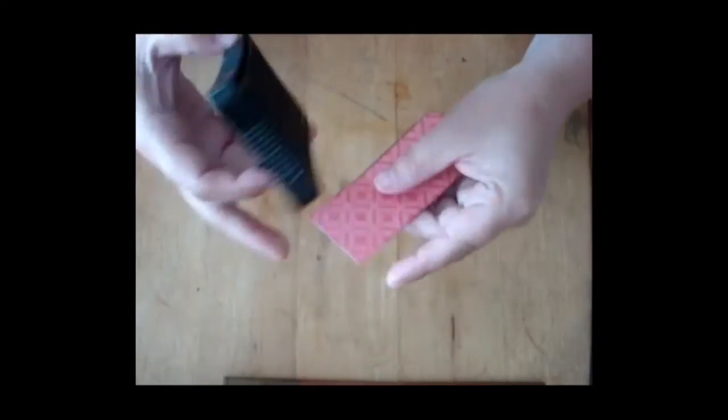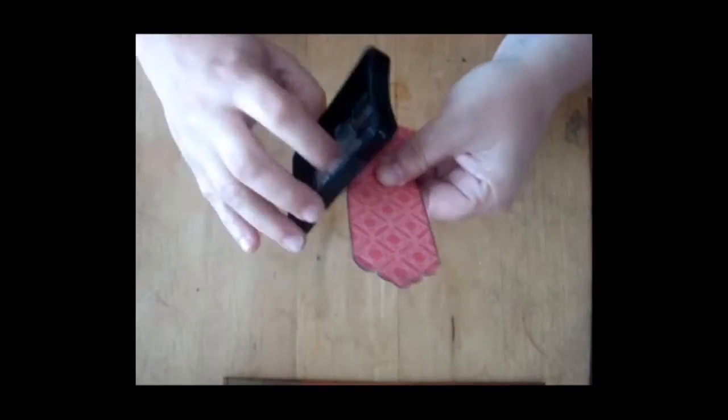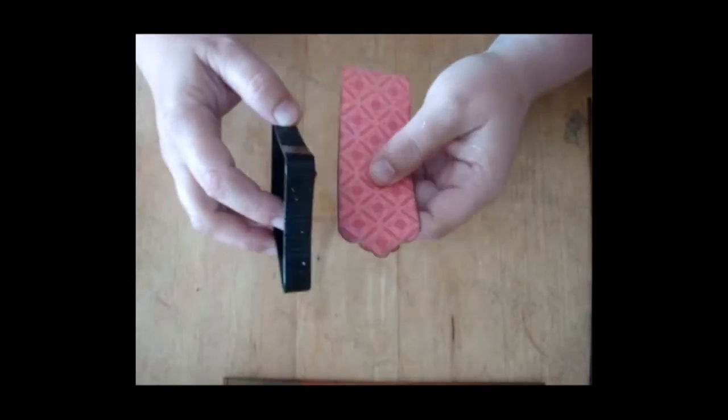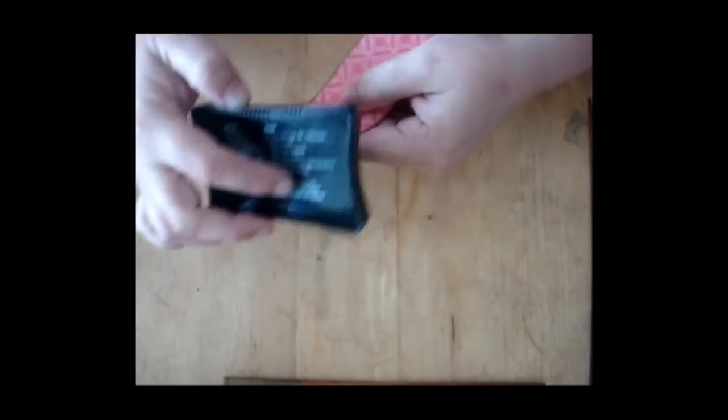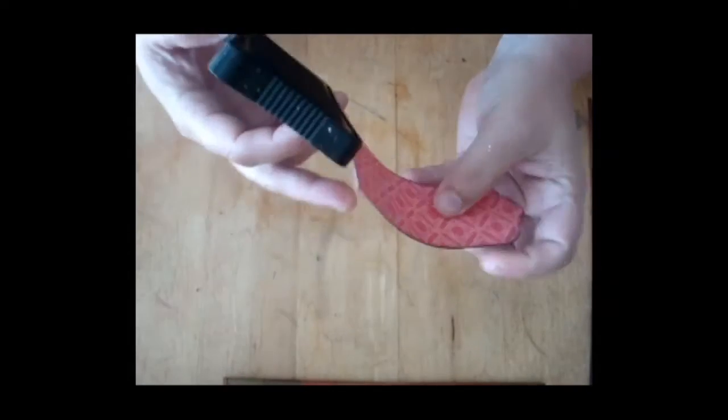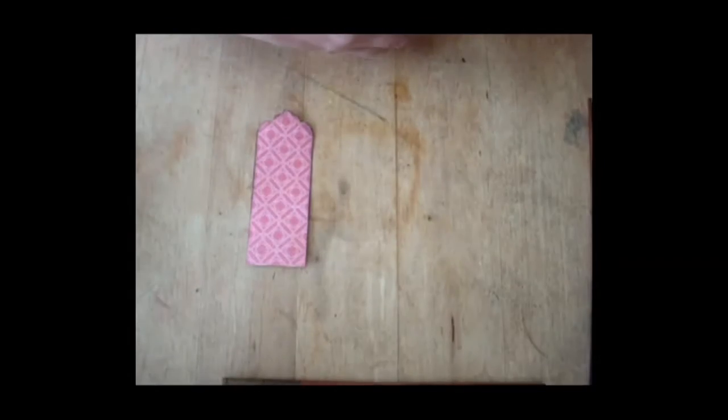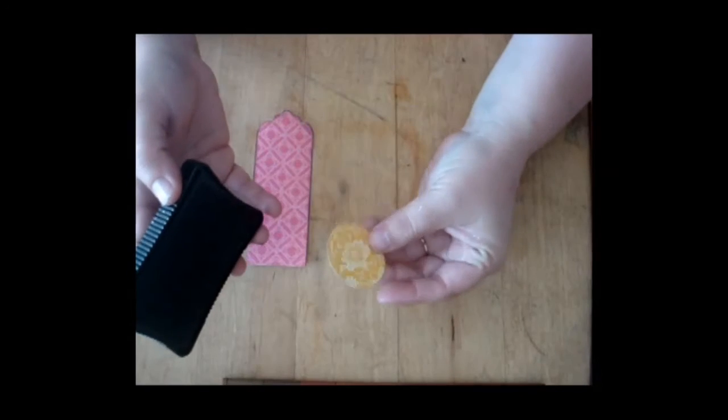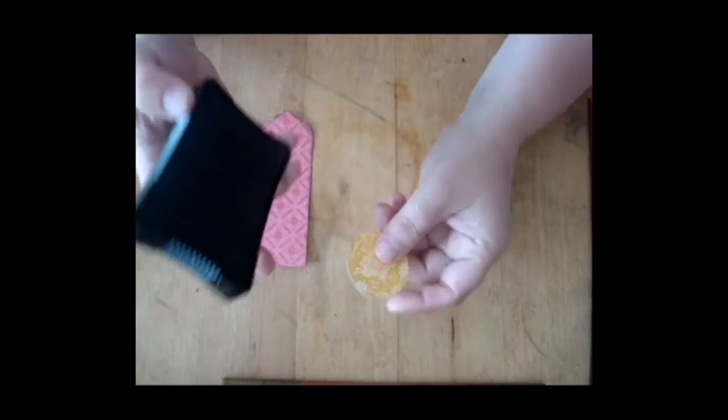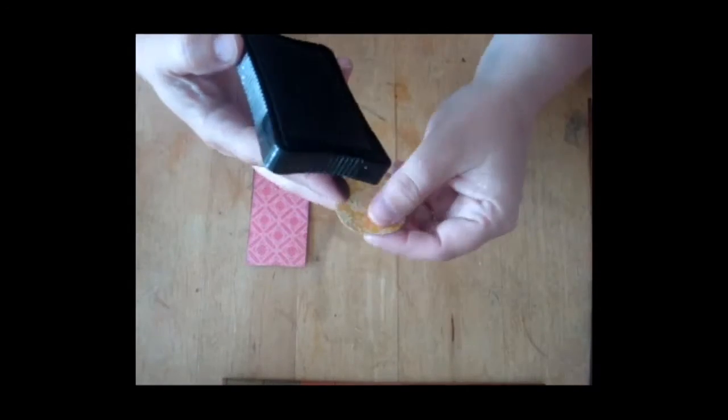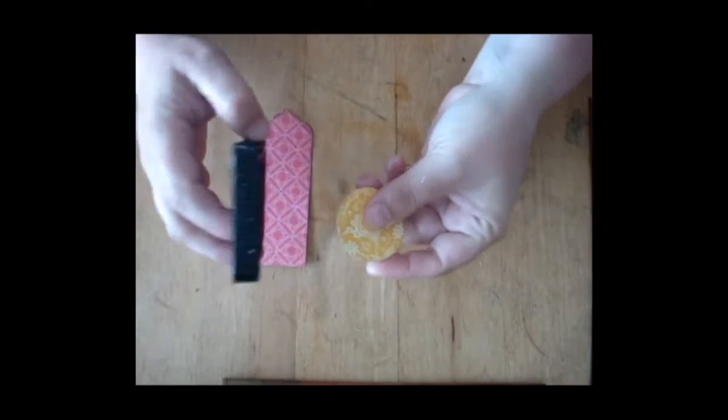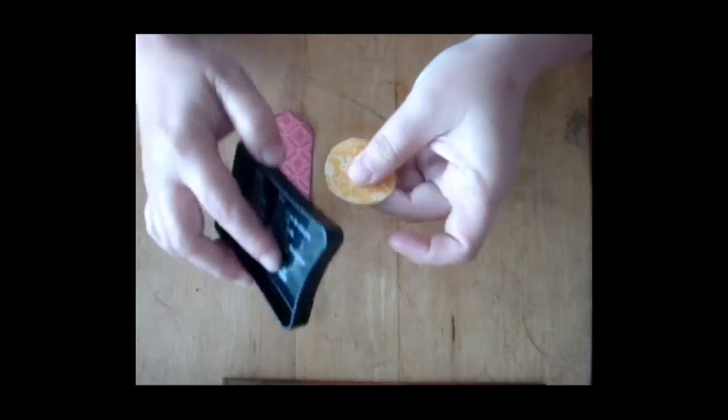I made this actually a little bit too long so I'm going to be cutting off the bottom part there. There we go. I also have a circle I've cut out from the back side of the Bohemian Bazaar.